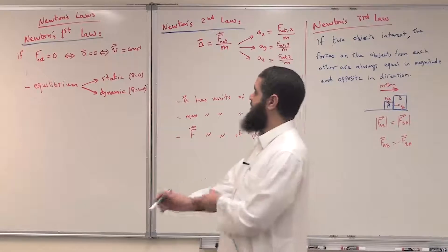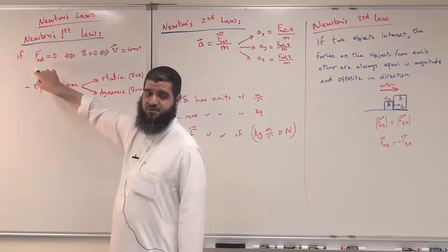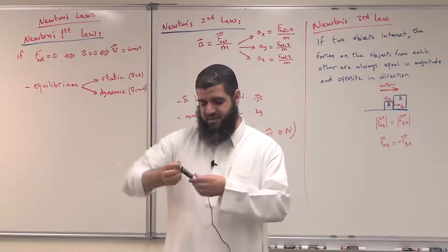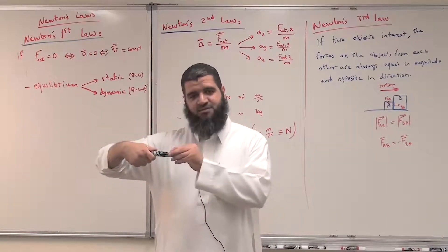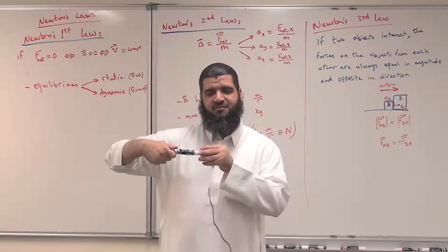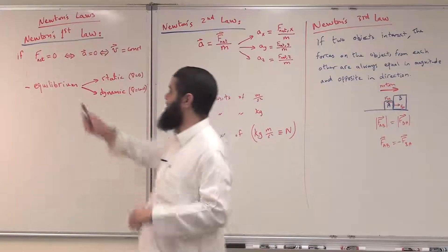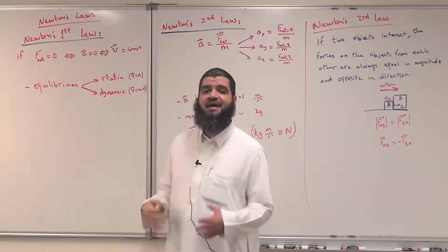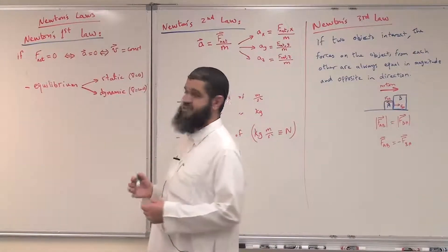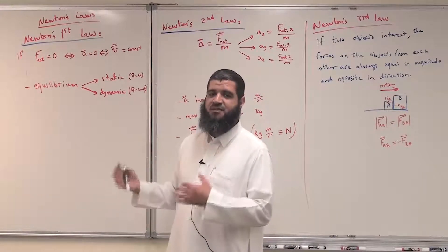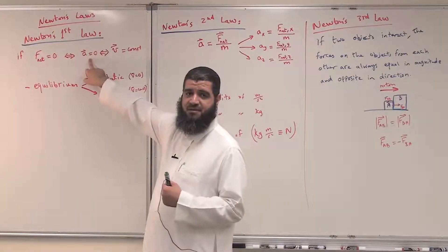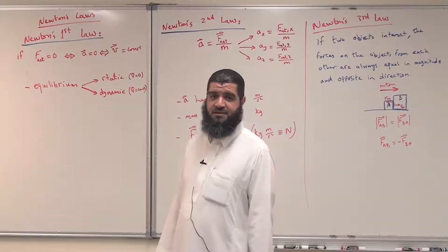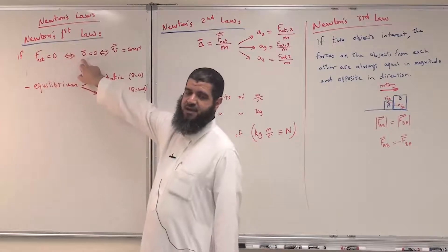Newton's first law states: if there is no net force exerted on an object — meaning there might be forces, but their resultant equals zero, for example a 5 Newton pull from one side balanced by an equal pull from the opposite side — then the acceleration of the object will be zero. If acceleration is zero, the rate of change of velocity is zero, meaning the velocity will be constant.